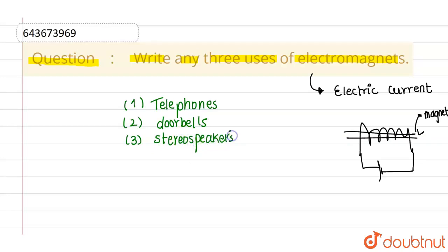So basically, we use electromagnets in electronic devices.